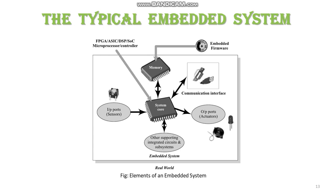The typical embedded system contains a system core, that is a single chip controller, which acts as the master brain of the system along with the other components as well. The controller can be a microprocessor, microcontroller, FPGA, DSP, or ASIC — that is, application specific integrated circuit — or application specific standard product.